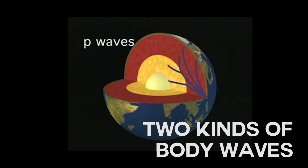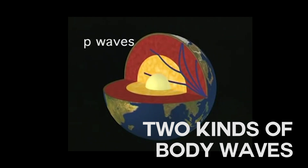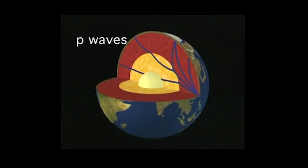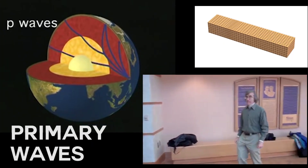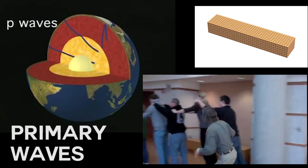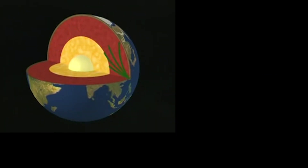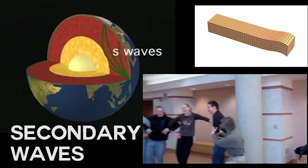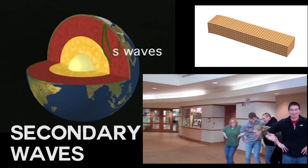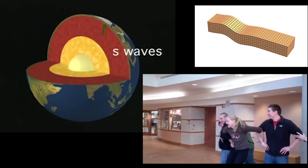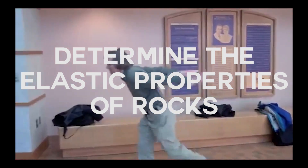There are two kinds of body waves: P waves, or primary waves, followed by S waves, or secondary waves, which travel more slowly. Seismic waves are also used to determine the elastic properties of rocks.